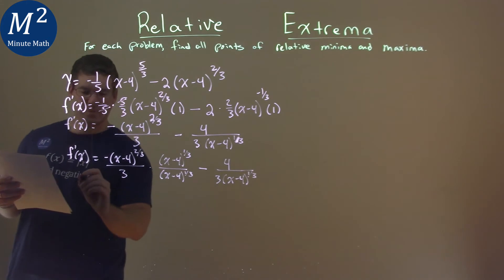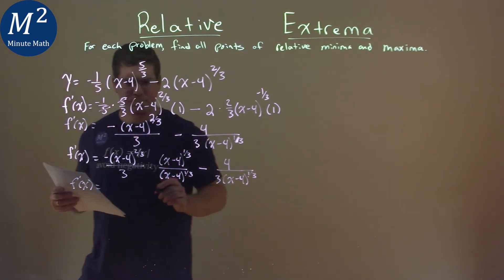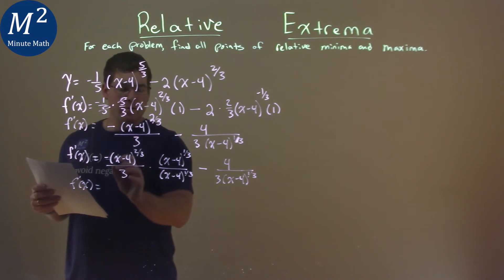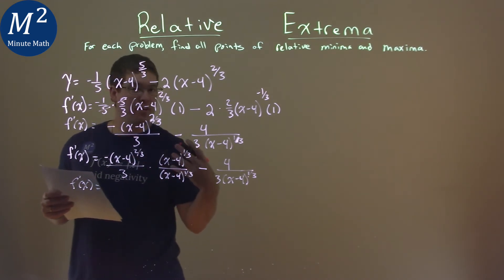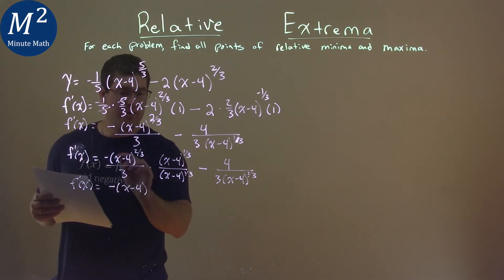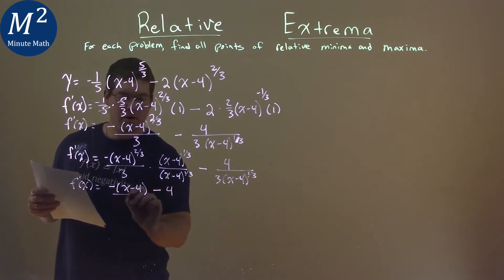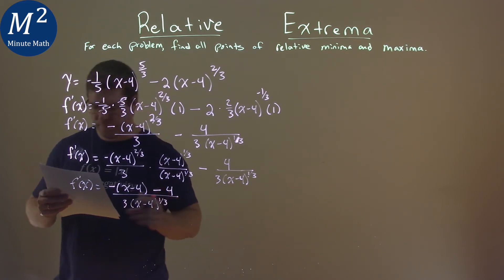From there, let's go simplify. Oh, lovely work coming out here. The numerator, well, we have two-thirds power and one-third power, multiply them. We add the exponent, which is the power of one. So, we have a negative x minus four to the first power here, and then we have a minus four that comes in. All over the shared denominator of three, x minus four to the one-third power.